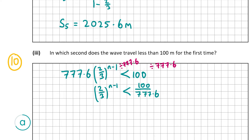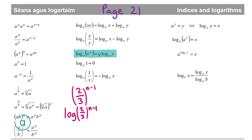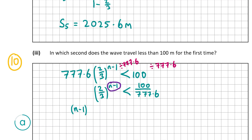The variable is in the exponent, so the only way to bring it down is to use logs, following the rules on page 21 of the formula tables book. The rule states that log(x^q) = q × log(x). So log((2/3)^(n-1)) equals (n-1) × log(2/3). We rewrite as (n-1) × log(2/3) < log(100/777.6), taking the log of both sides.